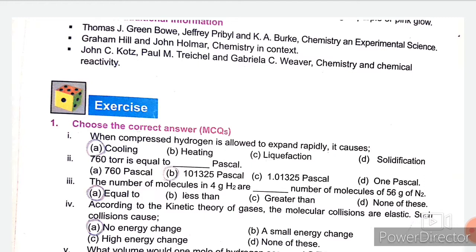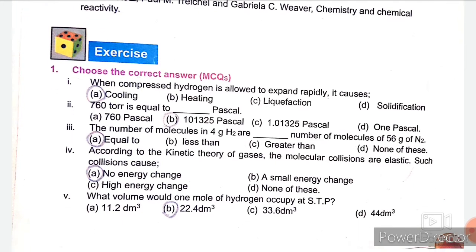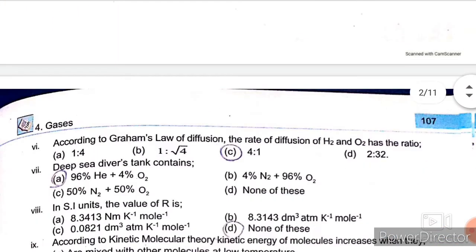First question is MCQs. So first part answer is A, second part answer is B, third part answer is A, fourth part answer is A, fifth part answer is B, sixth part answer is C.